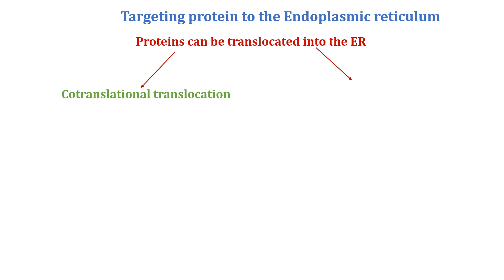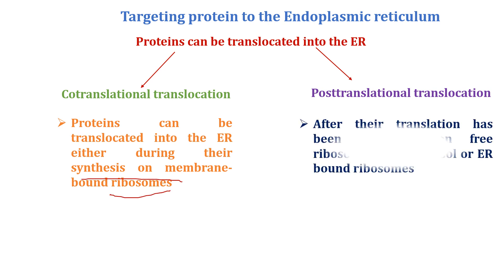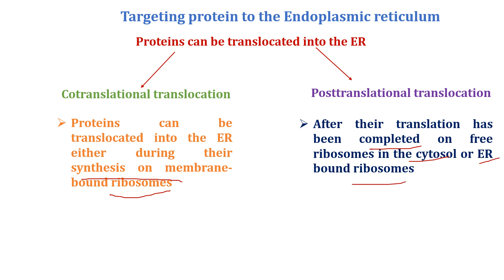The first mechanism is co-translational translocation, and the second is post-translational translocation. In co-translational translocation, the protein is translocated into the ER during synthesis on membrane-bound ribosomes. In post-translational translocation, protein translation is completed first on free ribosomes in the cytosol or ER-bound ribosomes.